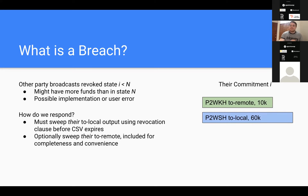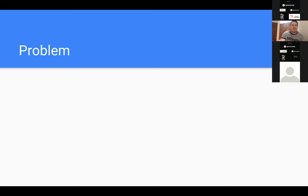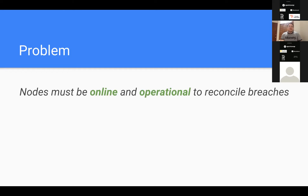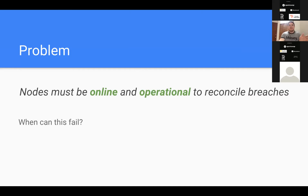The problem is that your node has to be online and operational to respond to breaches. LND has a subsystem called the breach arbiter which monitors for these on-chain events and spends outputs back to your wallet. If you're not online, you can miss the breach entirely and the remote party is able to spend the CSV outputs back to their wallet.